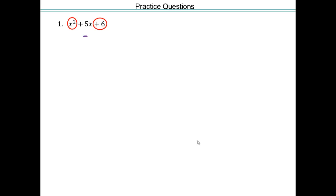Let's do some practice questions. So x squared times 6 — that would be 6x squared. Two numbers that multiply to give you 6 and add to give you 5. Can you think of those? 3 times 2. So 3x plus 2x add up to give you 5x and multiply to give you 6x squared.